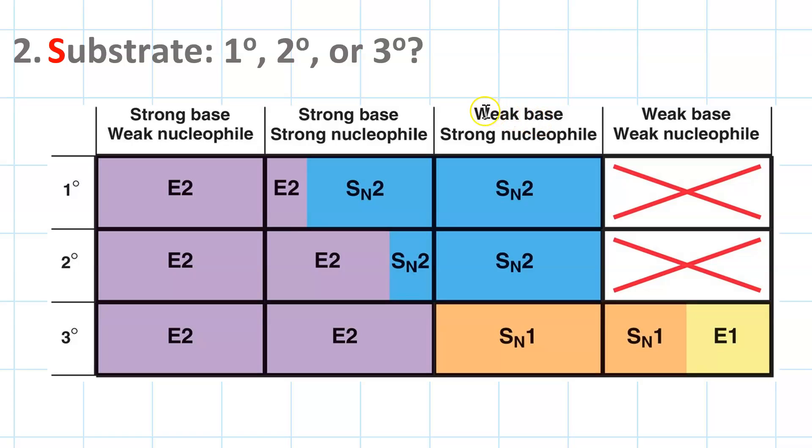If our reagent is a nucleophile only, like a halide ion, we'll get SN2 for primary and secondary substrates, and we'll get SN1 for a tertiary substrate, where SN2 is sterically prevented.